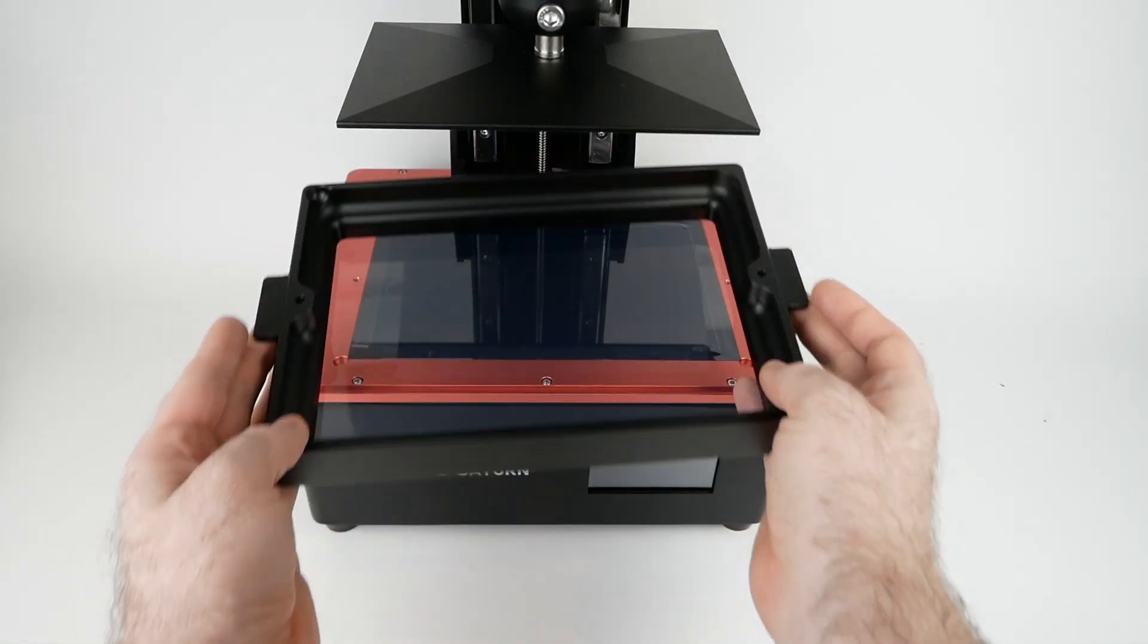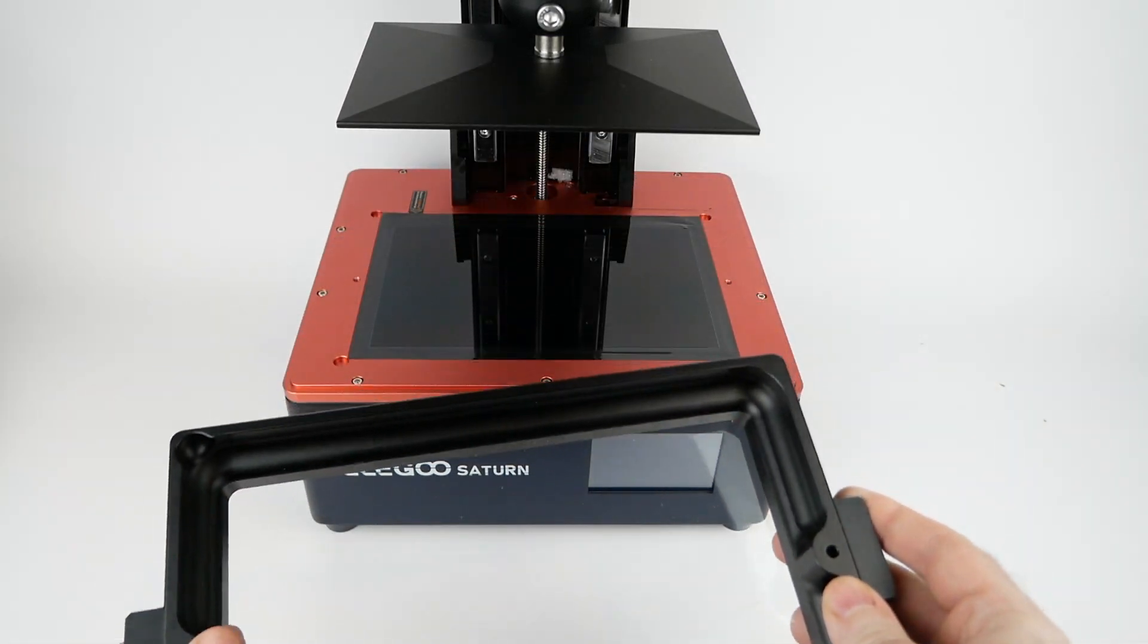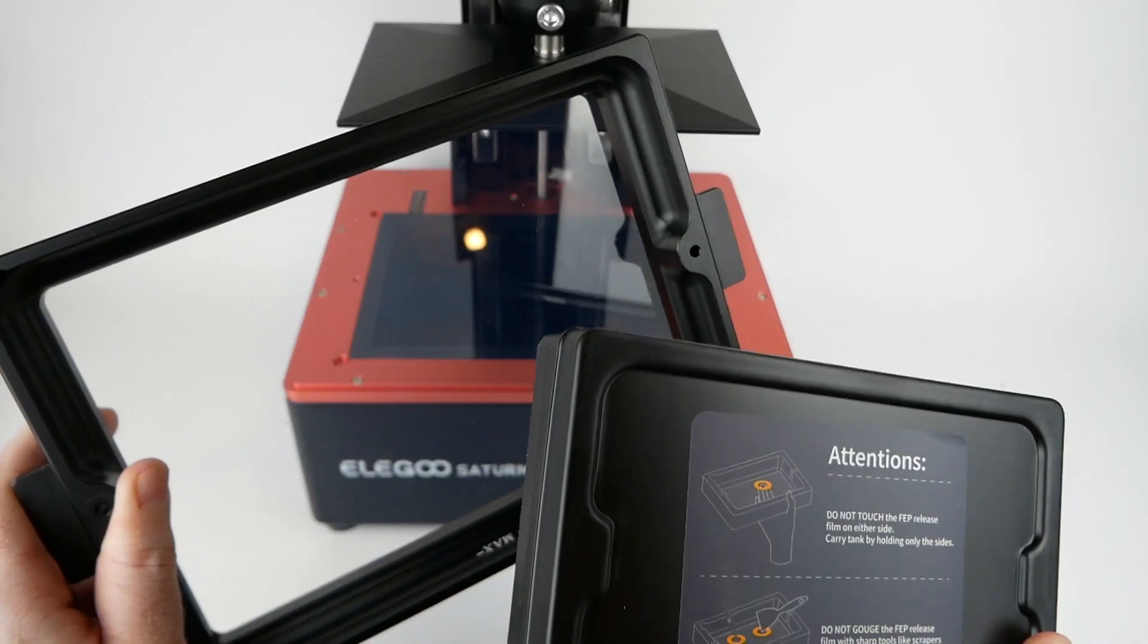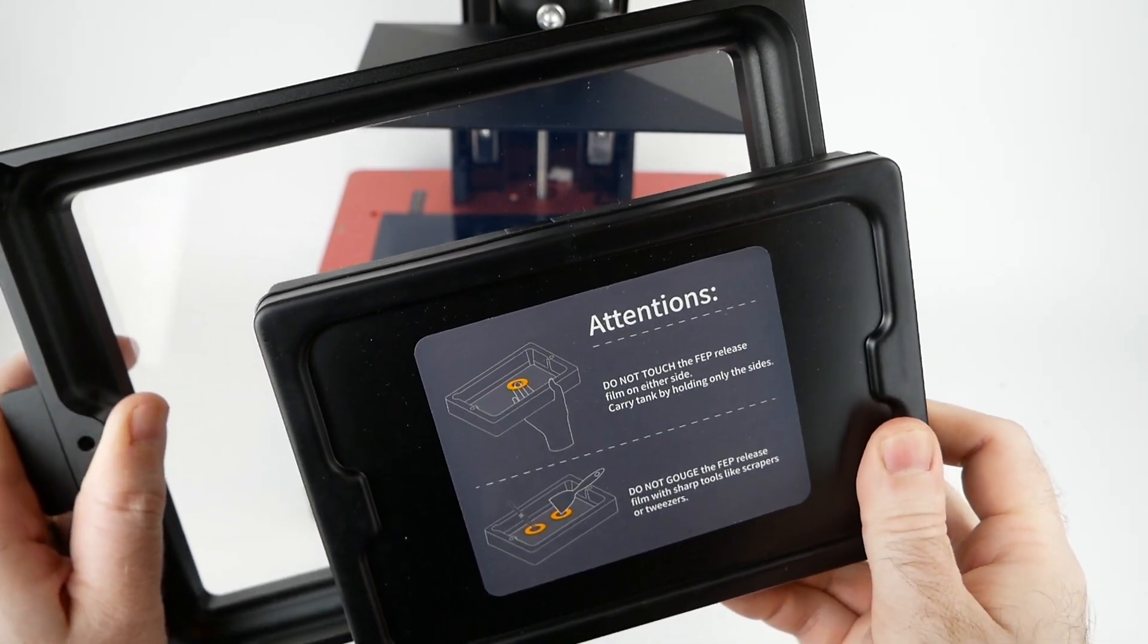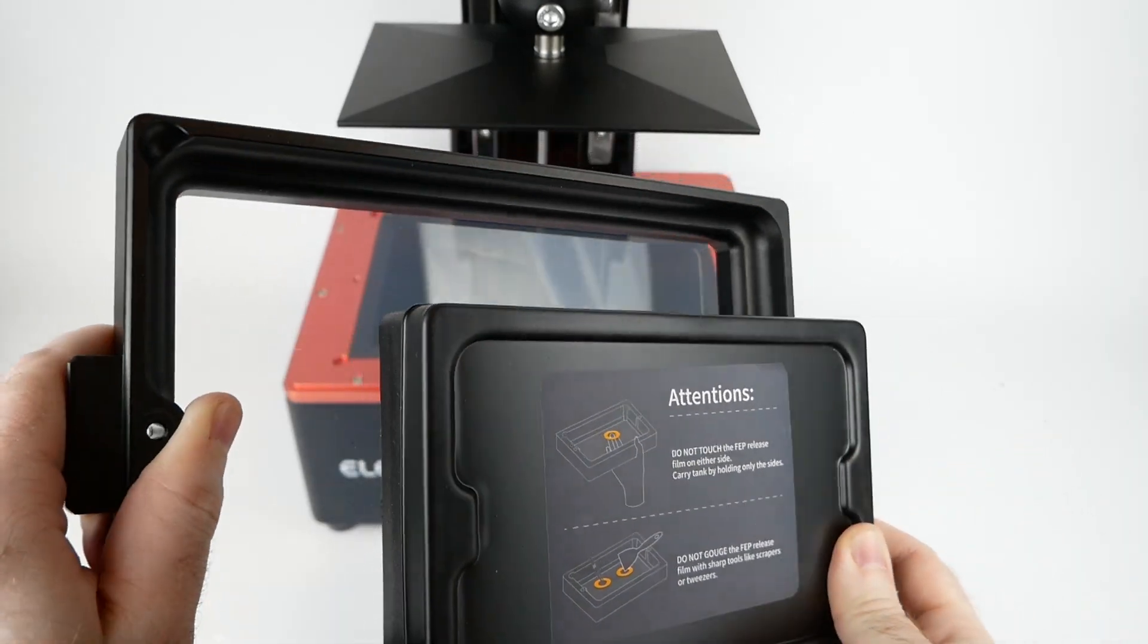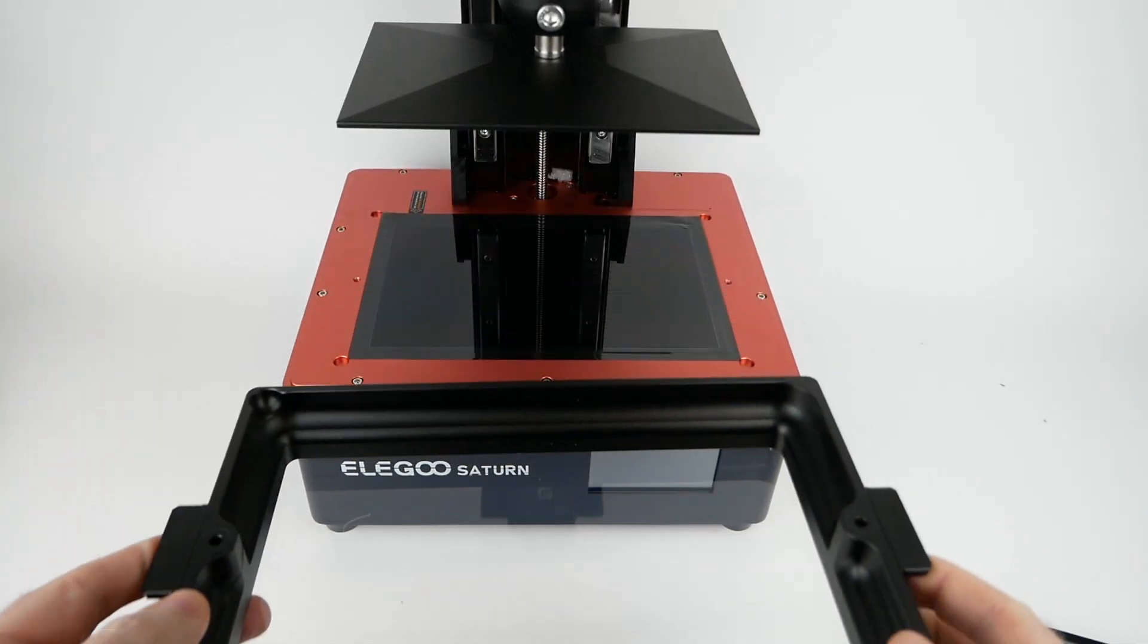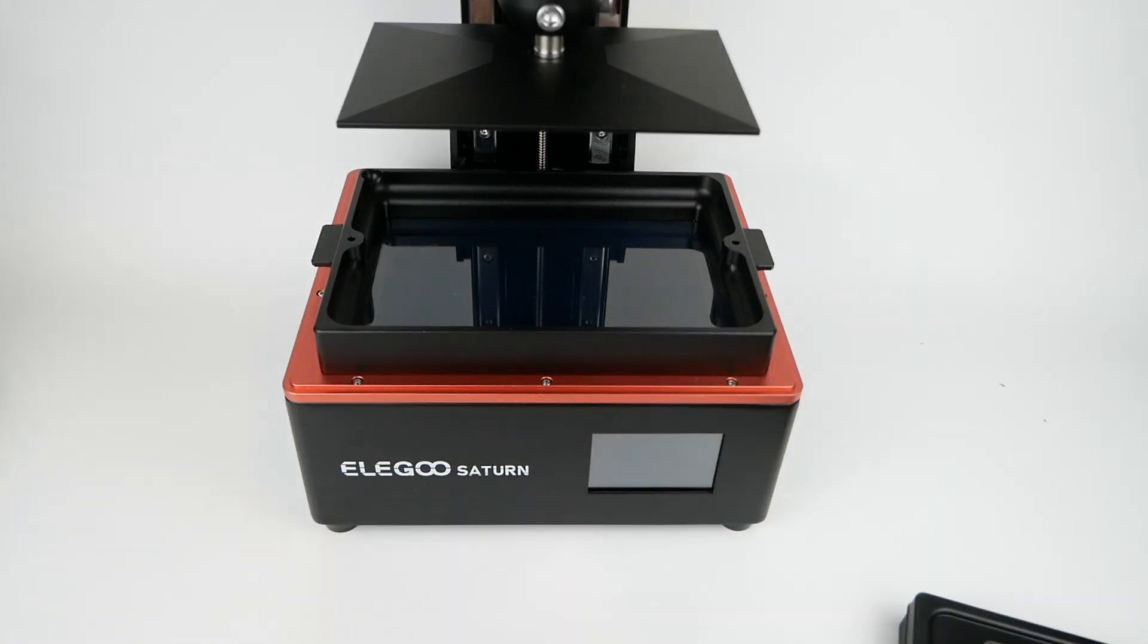If we take the resin vat out here, you can see it is quite large, but you may not be able to tell unless I compare it with something. So this is an unused replacement vat from a Mars printer, and if I hold it up like that, you can see there's a gigantic difference in the capacity here. I'm not sure offhand how much resin this actually can take, but it seems to me pretty clear that it's a lot more than the Mars.